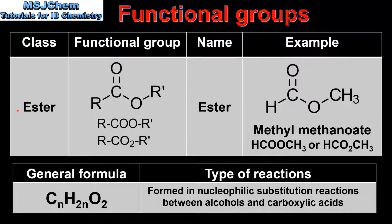Next we look at esters. The ester functional group has a carbon atom with a double bond to an oxygen and a single bond to another oxygen. Both the carbon atom and this oxygen atom are bonded to alkyl groups. The alkyl groups can be the same or different. The class and functional group name is ester. Here we have an example of an ester which is methyl methanoate. Note the condensed structural formula can be written in two different ways. The general formula for an ester is CnH2nO2.